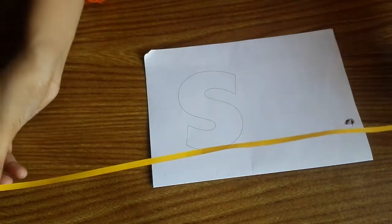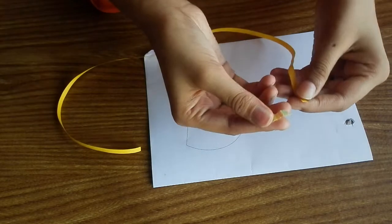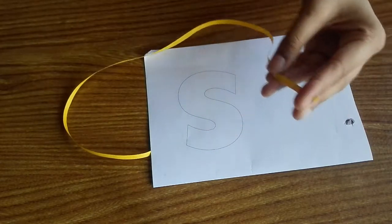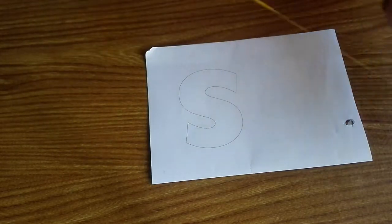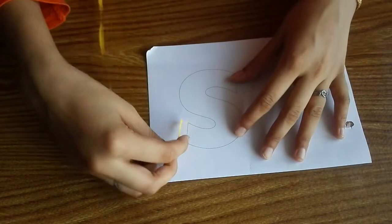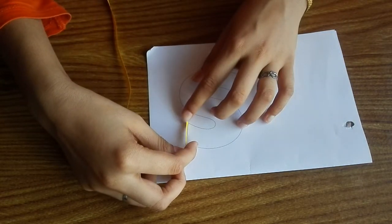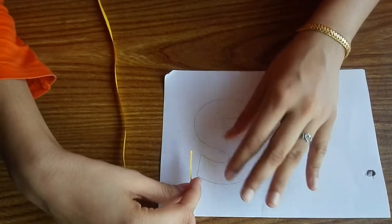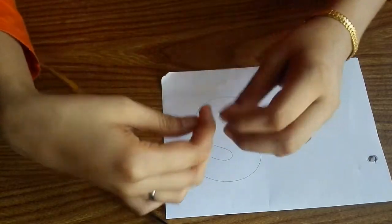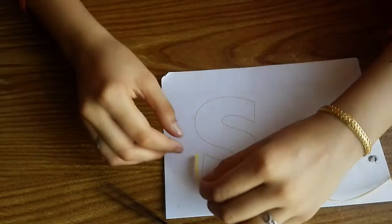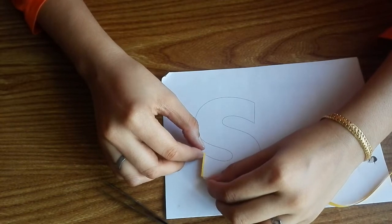I am going to take a yellow color quilling strip. You can take any color according to your wish. First I am going to start off with the top edge of the S. I will take the measurement and then fold it in this specific place.